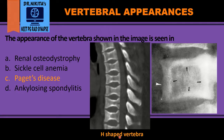Sickle cell anemia has an H-shaped vertebra, also called a codfish vertebra, where we see an alphabet H-shaped vertebra due to depression at the end plates caused by end plate infarction in sickle cell anemia. These are the various vertebral appearances, and they are commonly asked in the exam.